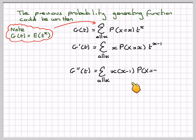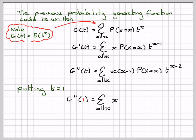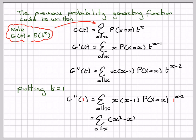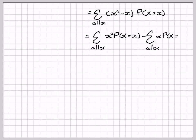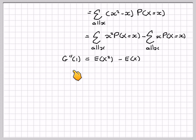Differentiating again, you get G''(T) = Σ x(x-1) · P(X = x) · T^(x-2). If you put T = 1, G''(1) = Σ x(x-1) · P(X = x) = Σ (x² - x) · P(X = x), which expands to Σ x² · P(X = x) − Σ x · P(X = x), giving E(X²) − E(X). So G''(1) = E(X²) − E(X).